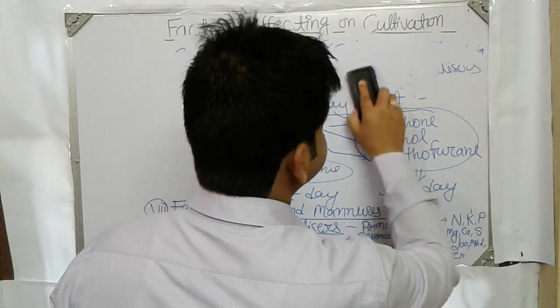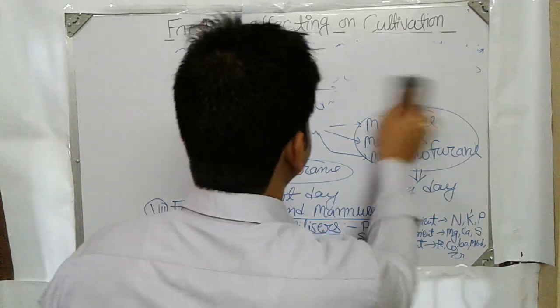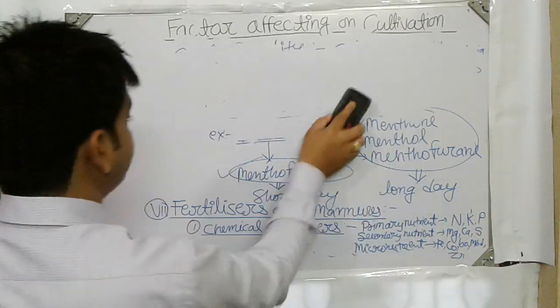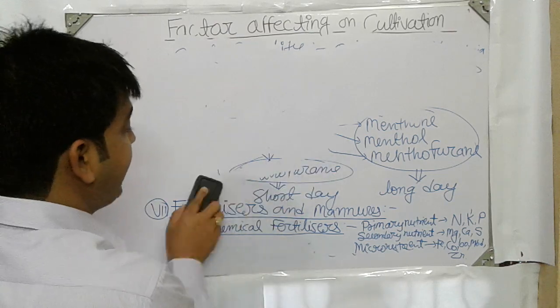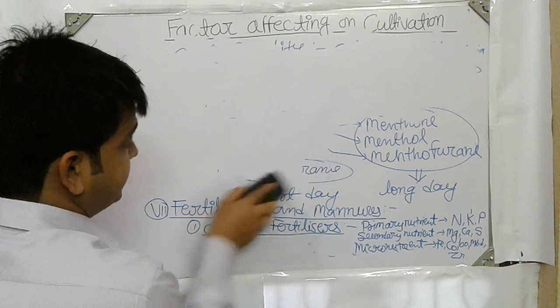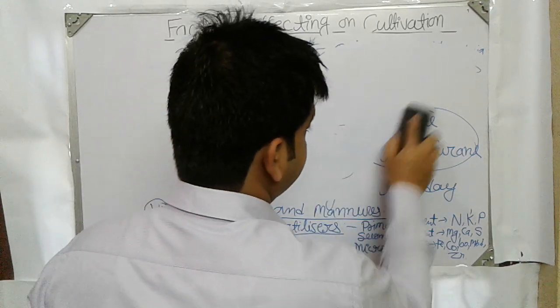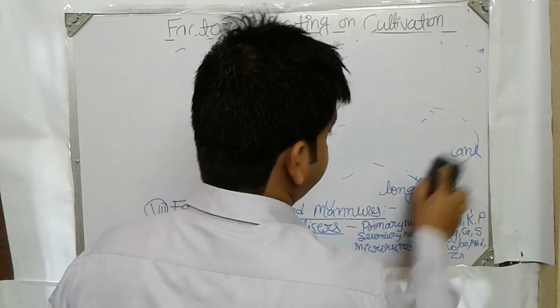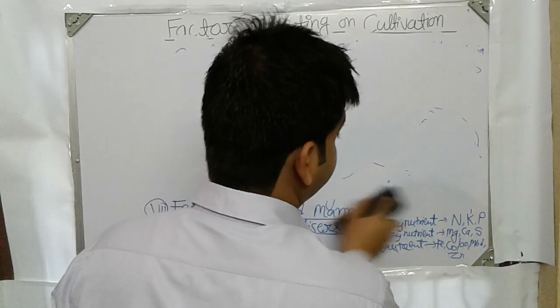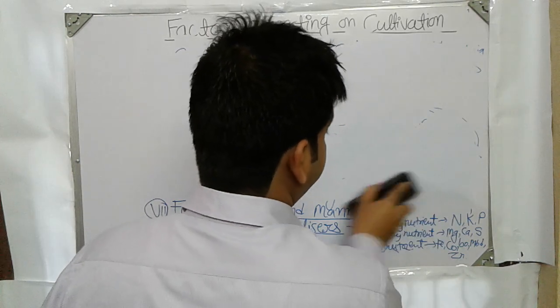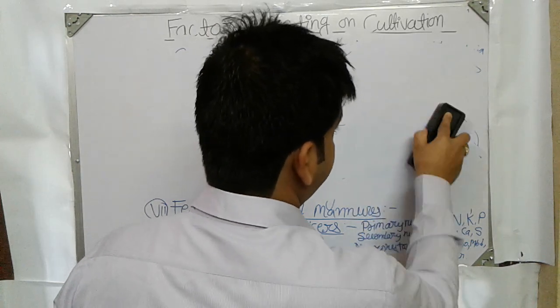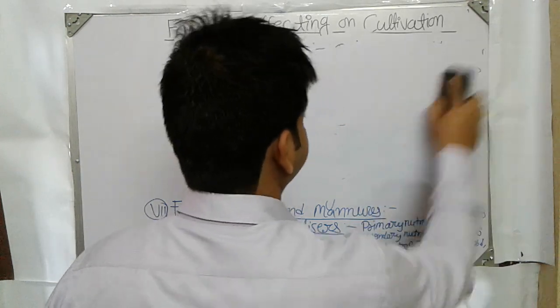The next very important factor is manure, which we get from different plants and seeds.